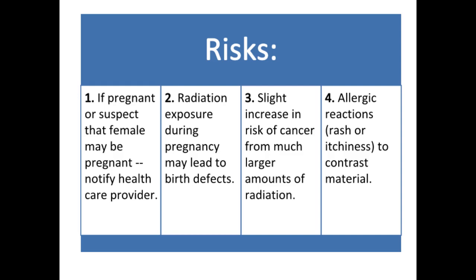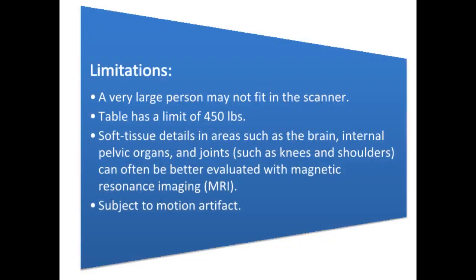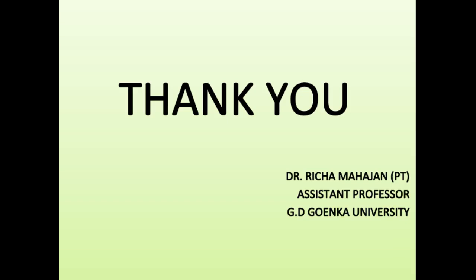Limitations of CT scan include that a very large person may not fit into the opening of a conventional CT scanner or may exceed the weight limit, usually 450 pounds, for the moving table. Soft tissue details in areas such as the brain, internal pelvic organs, and joints such as knees and shoulders can often be better evaluated with MRI. Any motion including breathing and body movements can lead to artifacts on the images, similar to blurring seen on a photograph taken of a moving object.